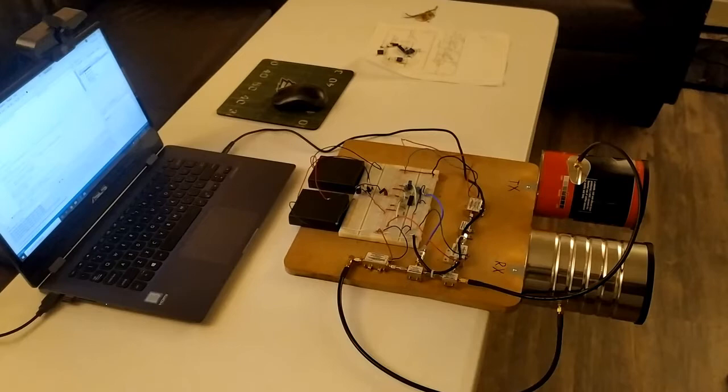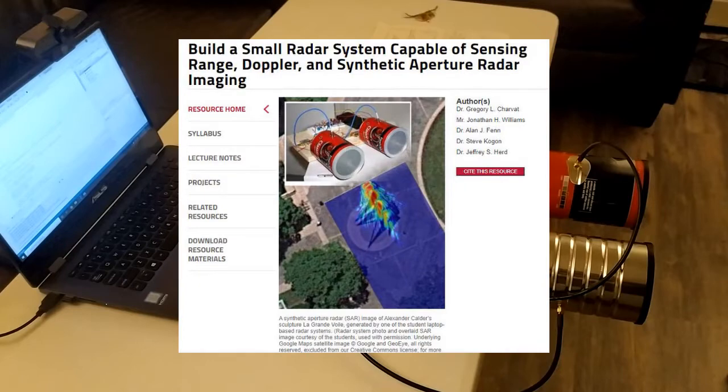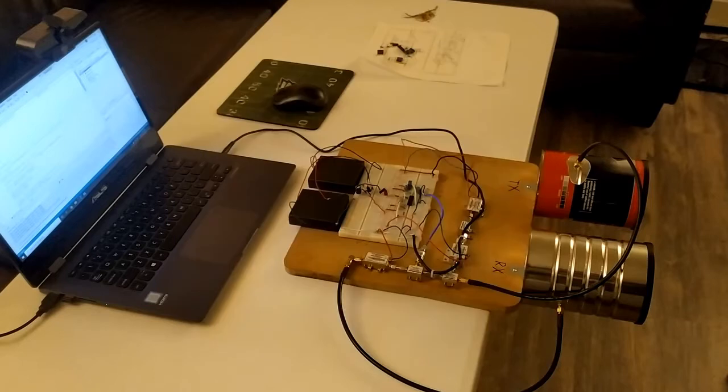So this radar system is based off MIT's online resource on how to build your own low-cost coffee can radar. All of this information can be found below in the description with the links to the PowerPoints. There are a few differences between my design and MIT's design, specifically the oscillator and the amplifiers.